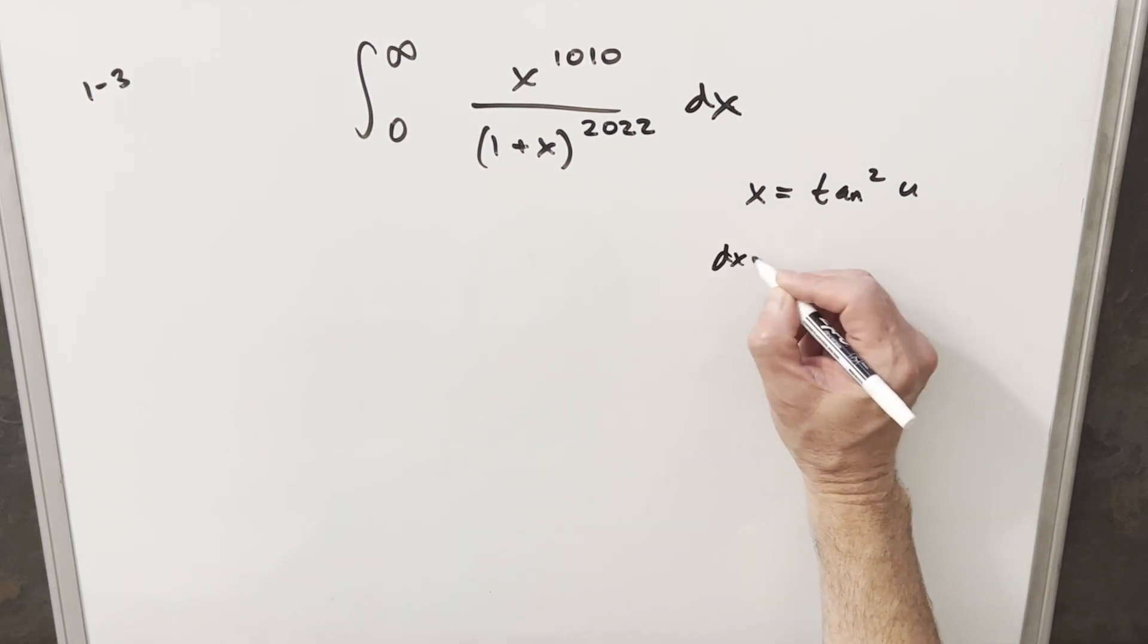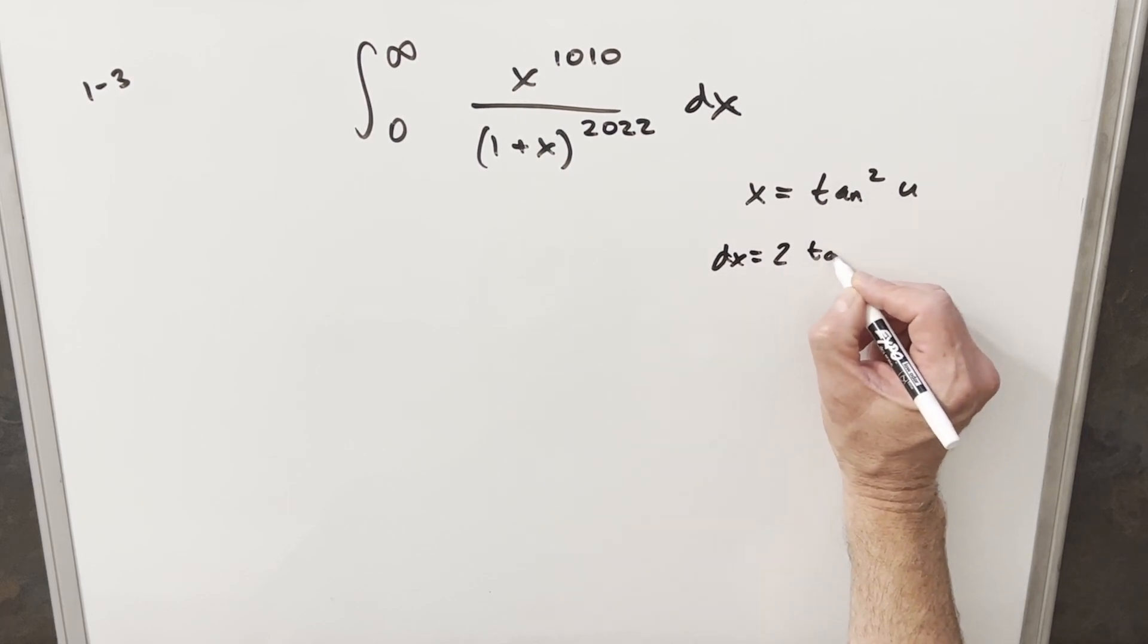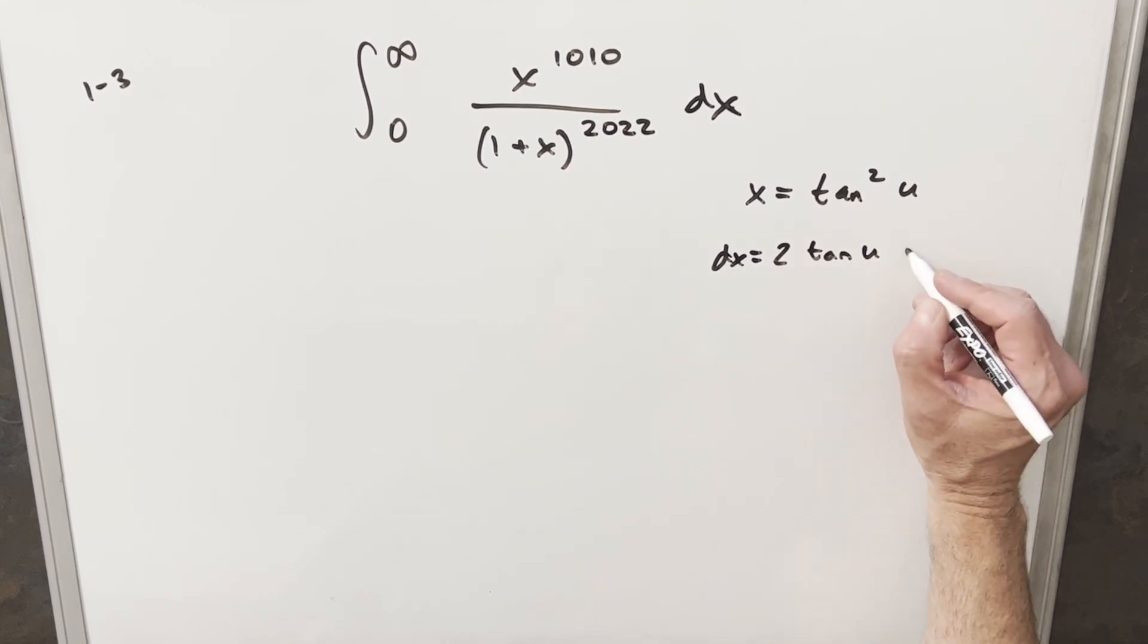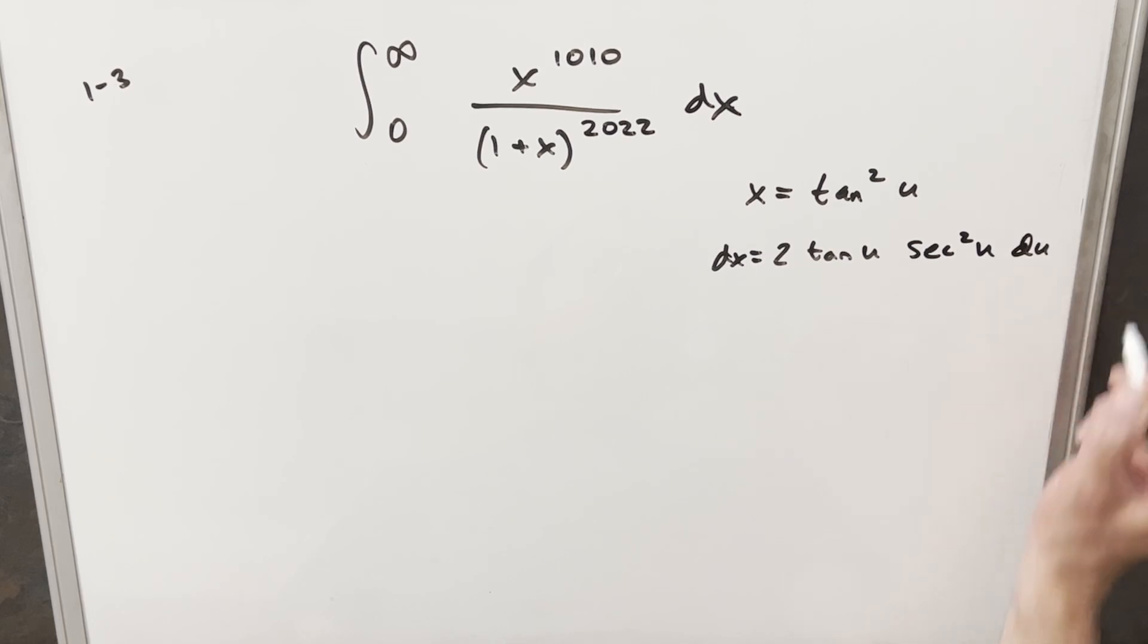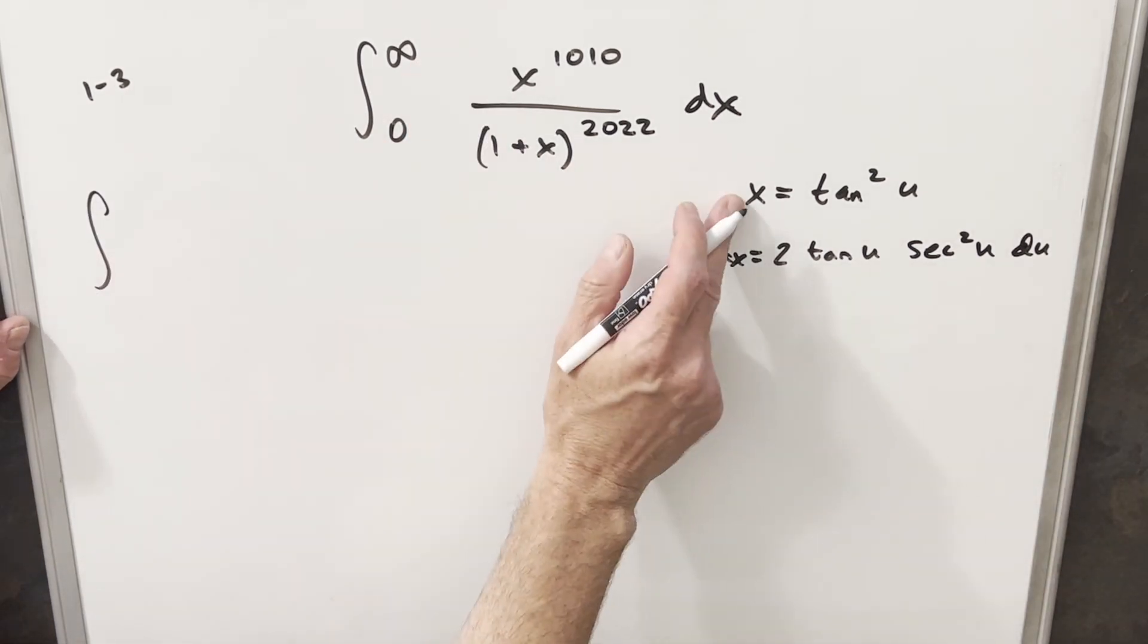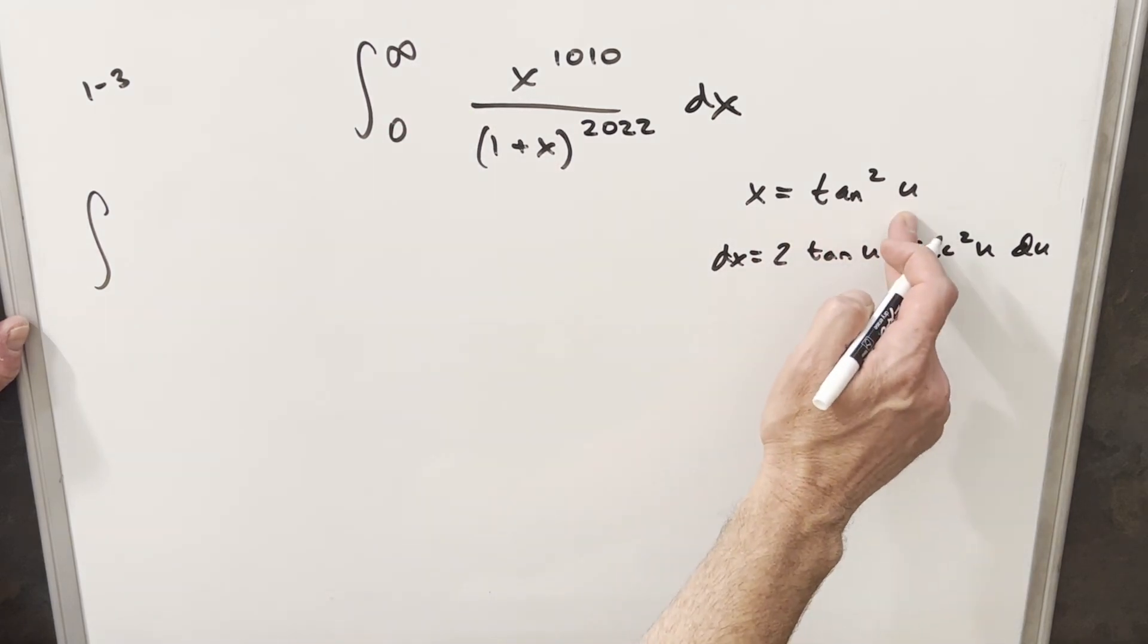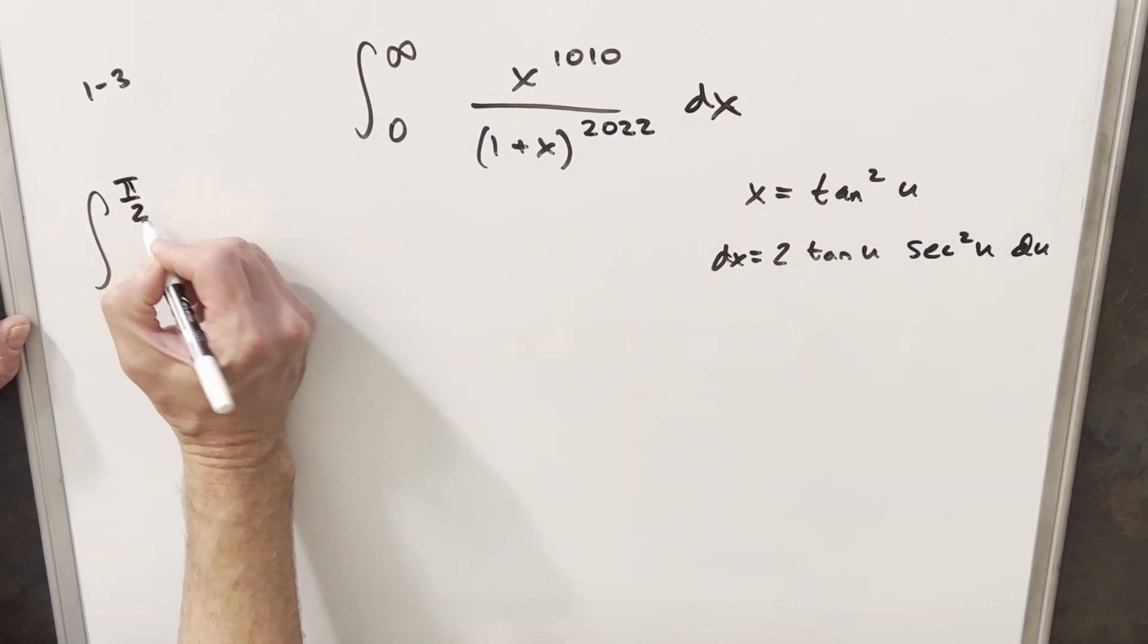And I'll take my derivative. So for dx, we're going to have power rule 2 tan of u. Then chain rule, derivative of tangent is going to be secant squared u du. And we can go ahead and make this substitution. So if x is infinity, that means that u is going to have to be pi over 2 here for this to approach infinity. So our upper bound will be pi over 2.